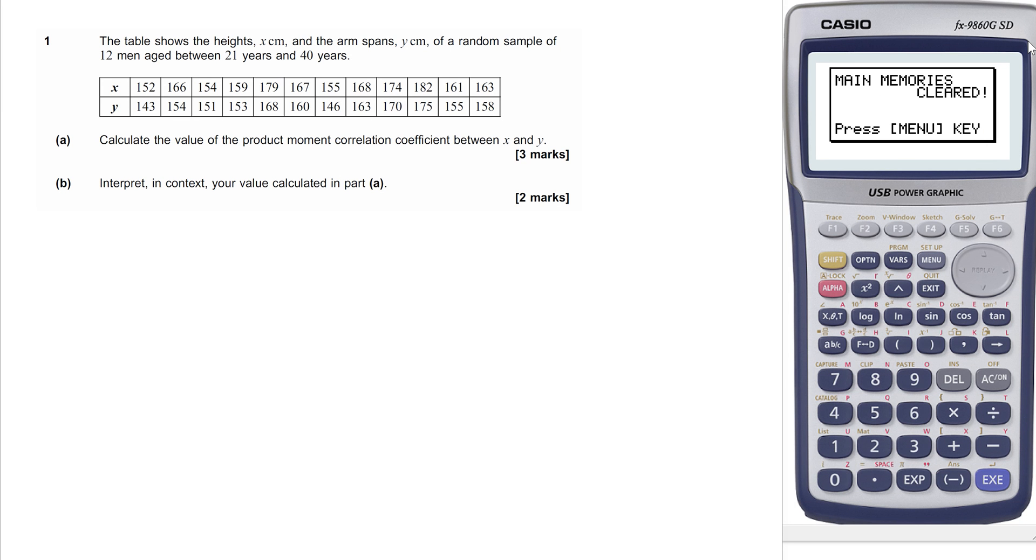That's the first question from the S1 2016 paper. We were given some information about the heights of some people and were asked to find the product moment correlation coefficient.